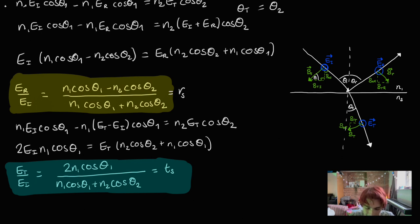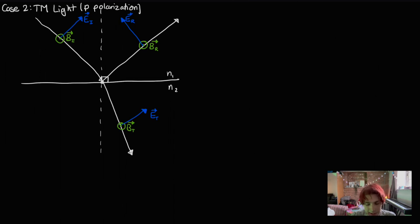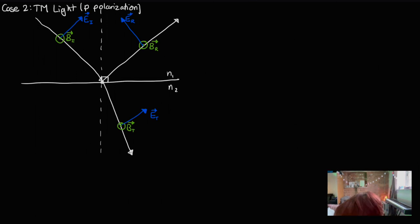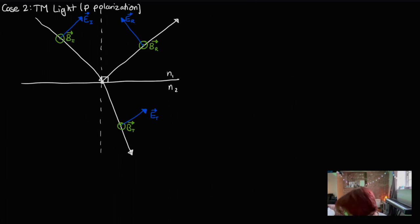Now we need to do the same thing but for P-polarized (transverse magnetic) light. Here is our diagram for the transverse magnetic case — it's essentially the same, only reversed. Now we have the magnetic field oscillating in and out of the plane, so it's actually the electric field that we need to resolve into the axes of the boundary. In a very similar way as before, we resolve the electric field into its normal and tangential components with respect to the boundary.